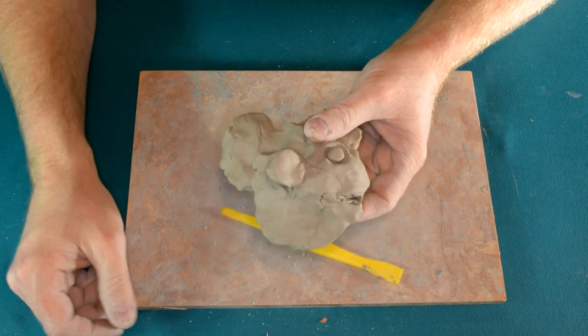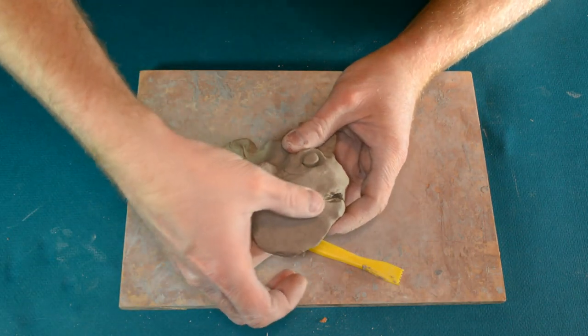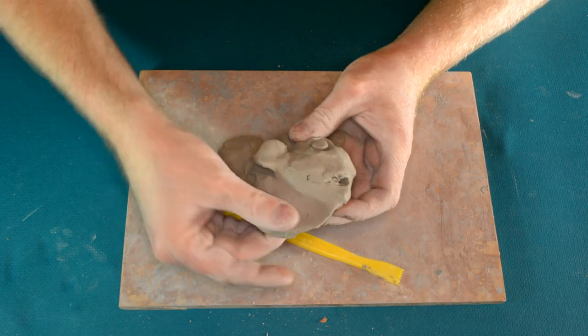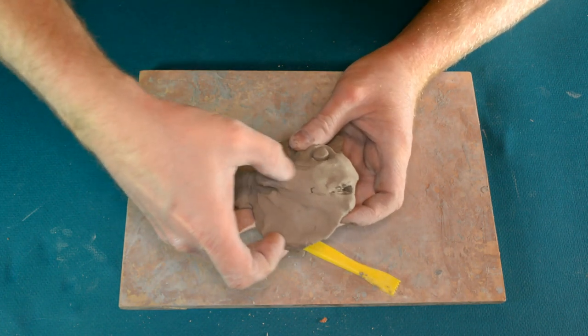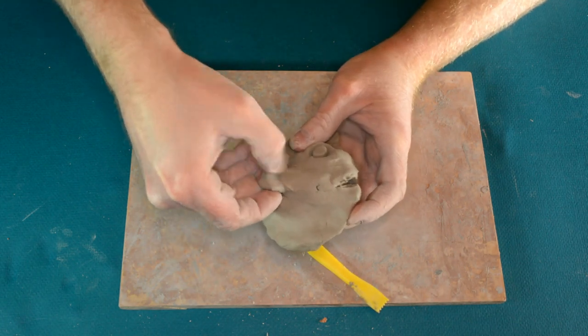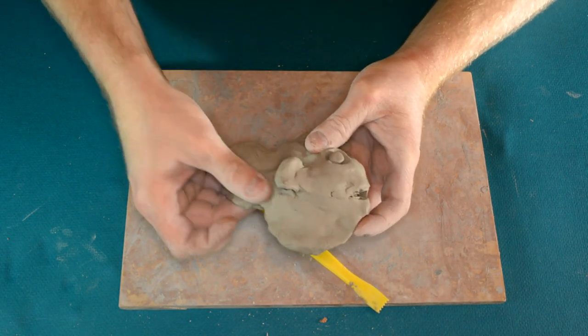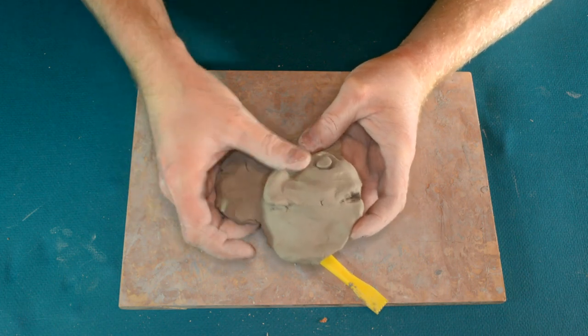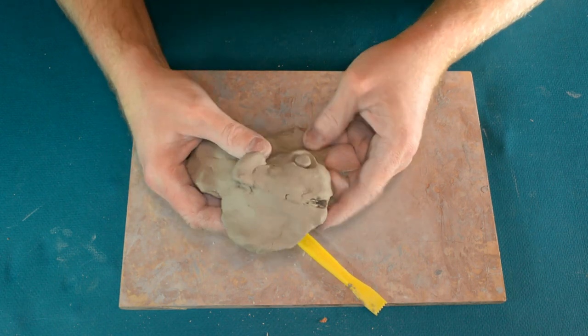Now, when you want to smooth something like this out, you take the side of your thumb and you slide the side of your thumb along it, and that will smooth it out. I like to put in my textures just after I've smoothed it. I've confirmed that I like its shape. There we go. And then move on to the next step.